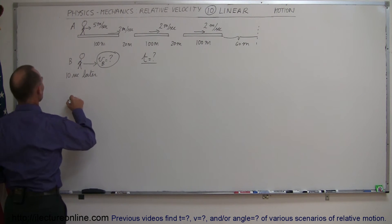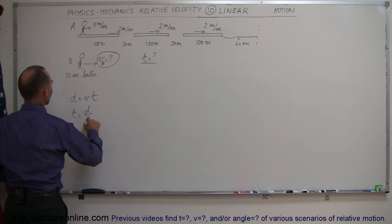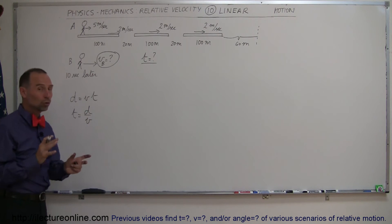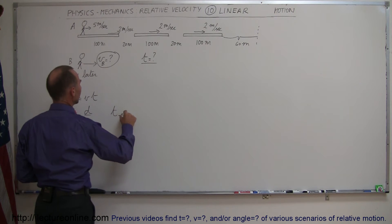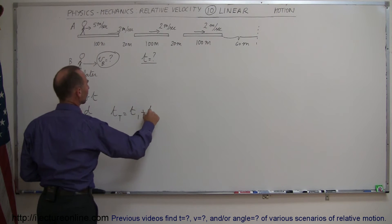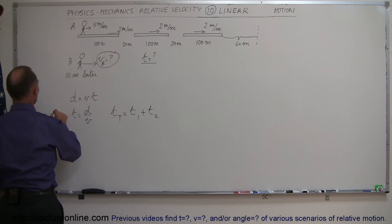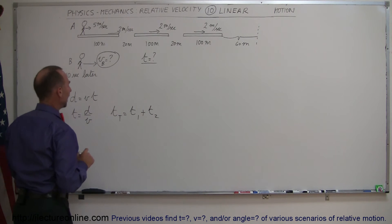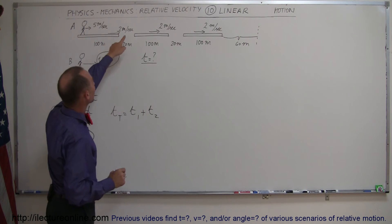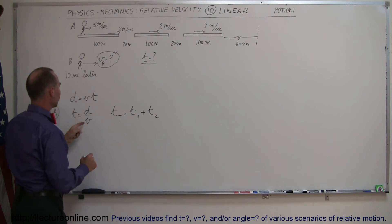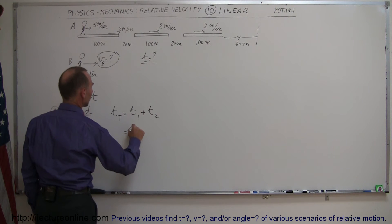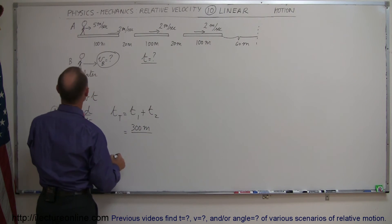We have the equation distance equals velocity times time, so we can divide it up. We can say time is equal to distance divided by velocity, and since we have two areas where it has two different velocities, we can say that time total is equal to time 1 plus time 2. And of course this is for passenger A. Time 1 will be the time that it takes to cover the 300 meters on the conveyor belts.